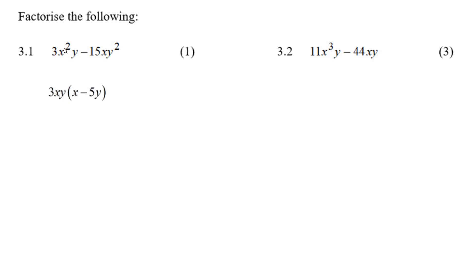There's x's in both and there's y's in both. So 3xy is your greatest common factor. It sits out here. Now 3xy times x gives you 3x²y. 3xy times minus 5y gives you the minus 15xy². And there you go.